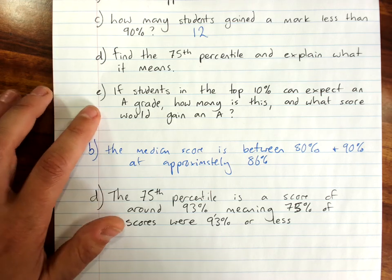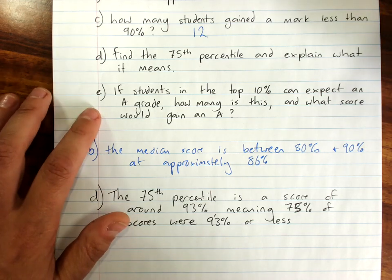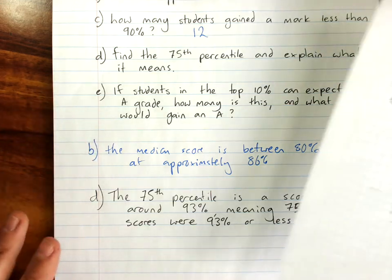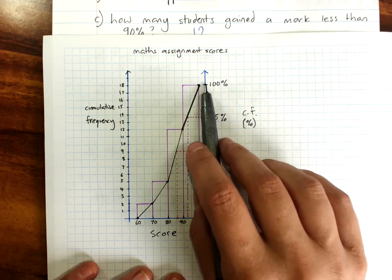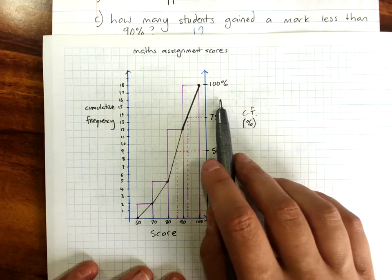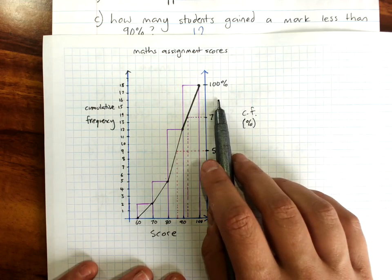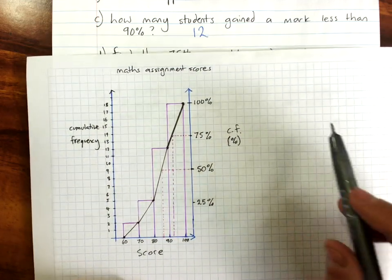Last question. If students in the top 10% can expect an A grade, how many is this and what score would gain an A? So, then of course I've got to get the top 10% or the 90th percentile and work out what score that equates to.